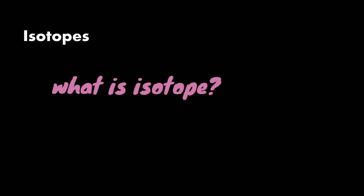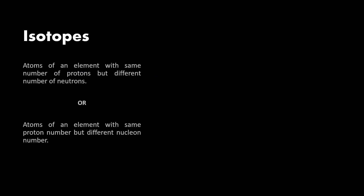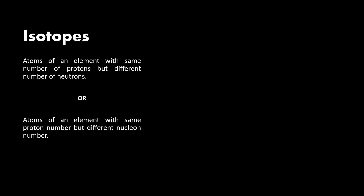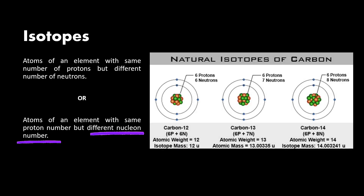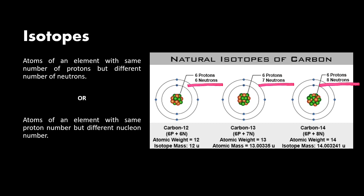Now we shall look at another term called isotopes. Isotopes refer to atoms of an element with the same number of protons but different number of neutrons. Or, it can also be defined as atoms of an element with the same proton number but different nucleon number. For example, three atoms are isotopes because they are atoms of the same element — carbon — with the same number of protons, which is six, but different number of neutrons. We can represent all elements using isotopic notation.